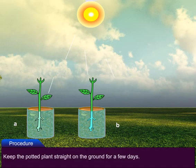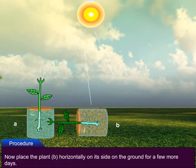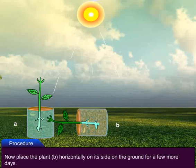Procedure: First, keep the potted plant straight on the ground for a few days. Second, now place the plant horizontally on its side on the ground for a few more days.